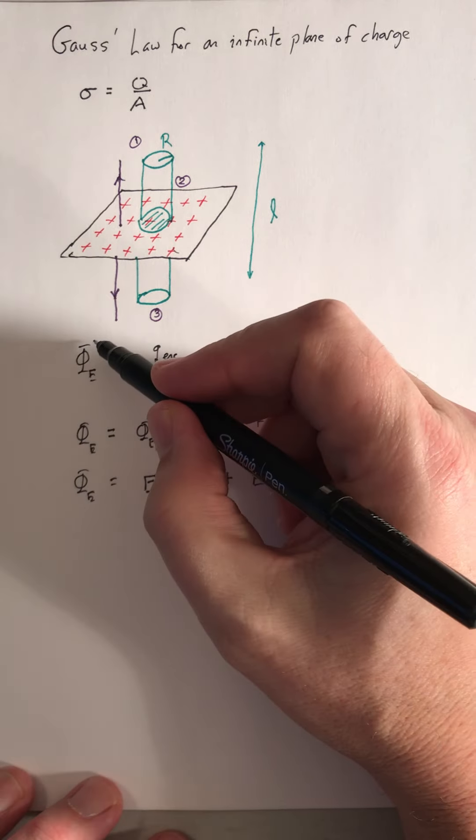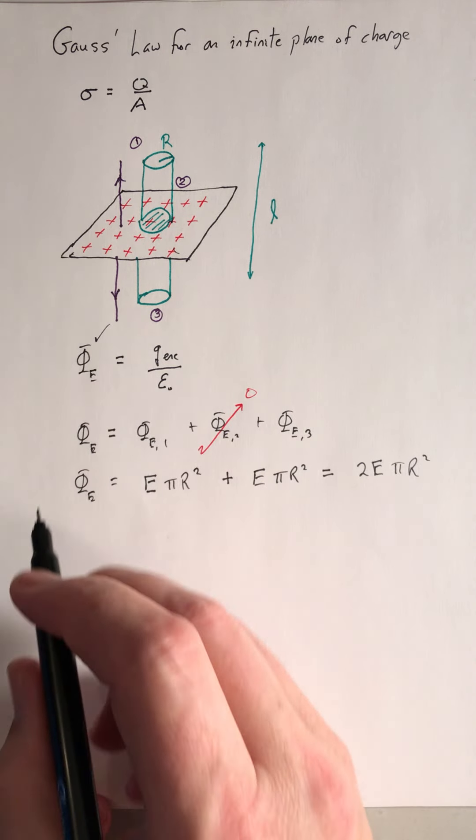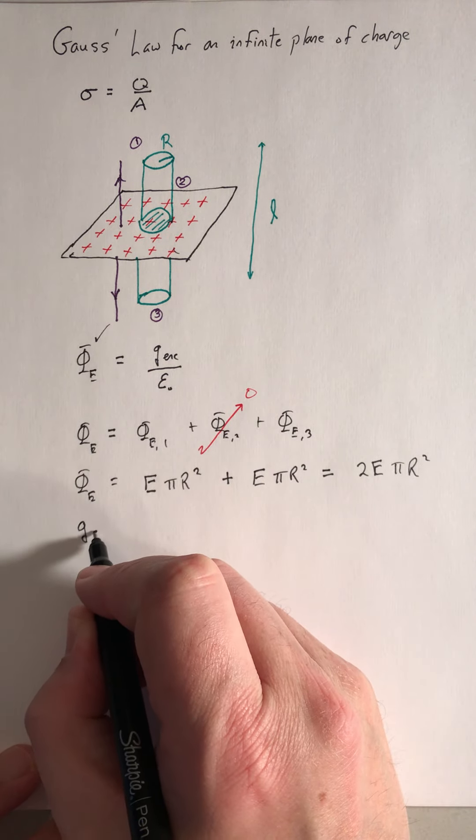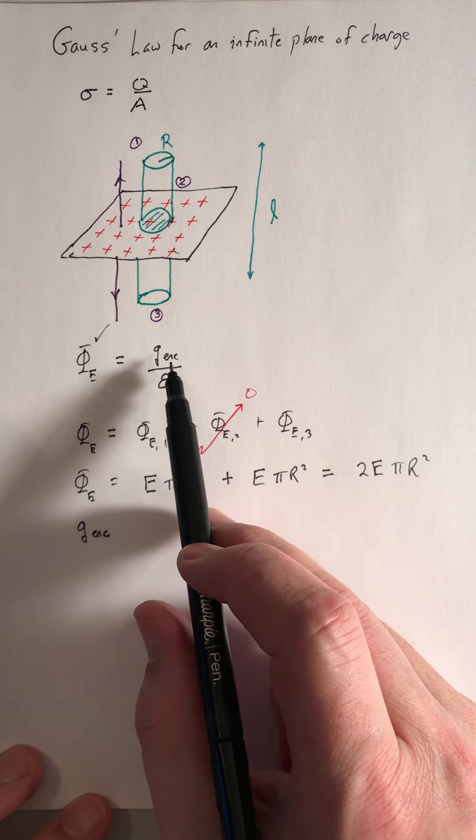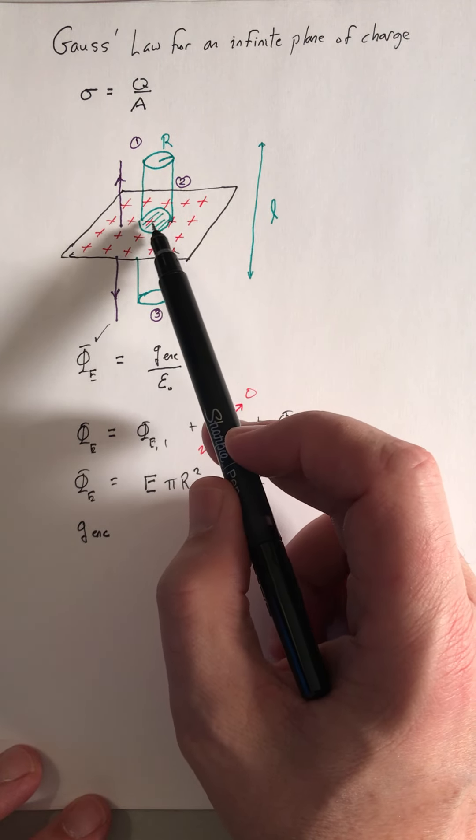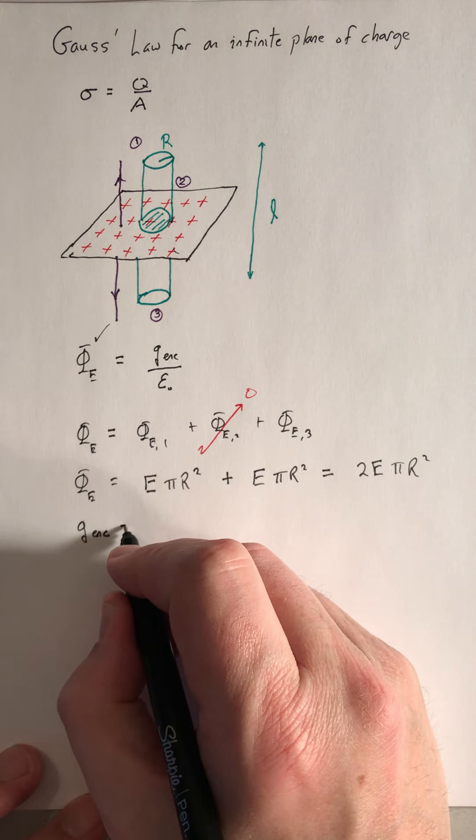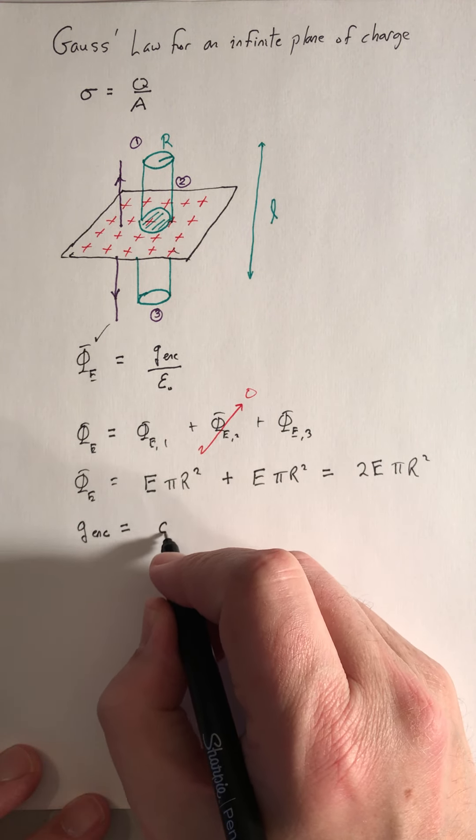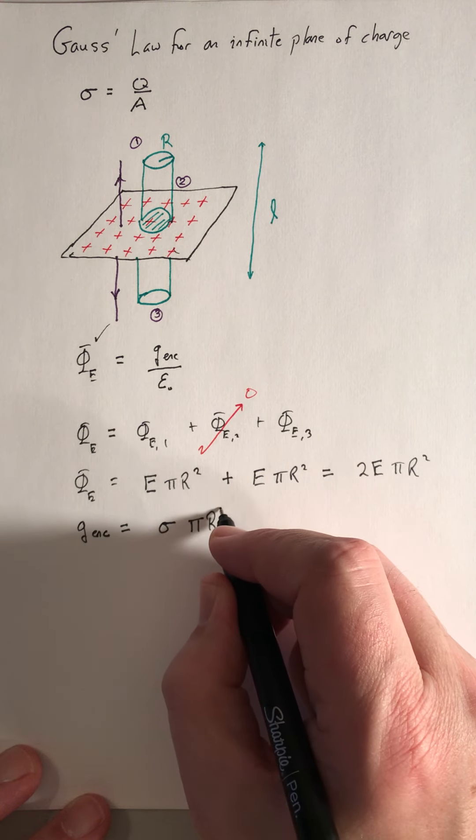We also need to know the charge enclosed to apply Gauss's law. So the charge enclosed is going to be the surface charge density times the area of that green circle. So it's going to be sigma times pi r squared.